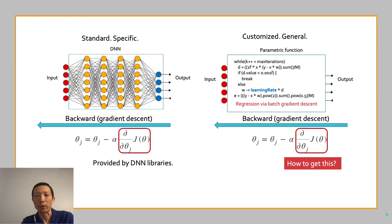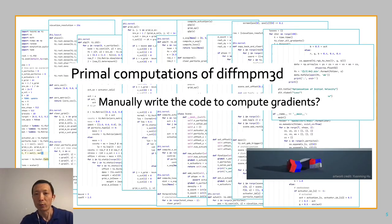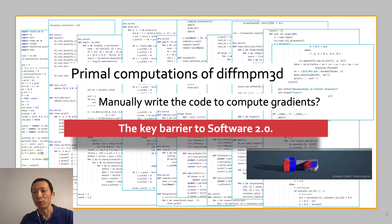Ask the programmers to write code to calculate gradients? It's not so easy to do for such a program with while loops and break statements inside. It would be even worse if the primal code is 10 pages long. Manually writing code to compute the gradients becomes impractical. This is the key barrier to realizing the future intelligent software, also called Software 2.0.